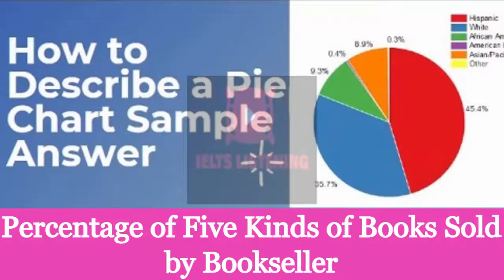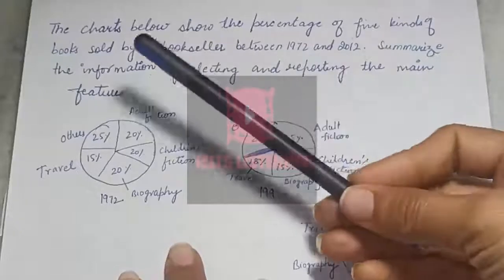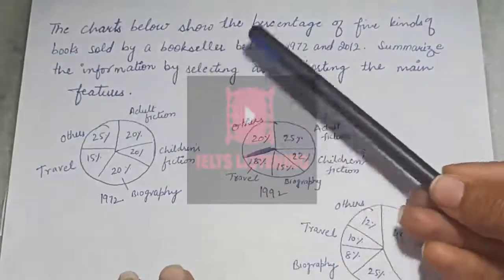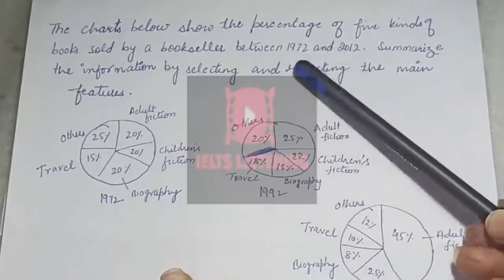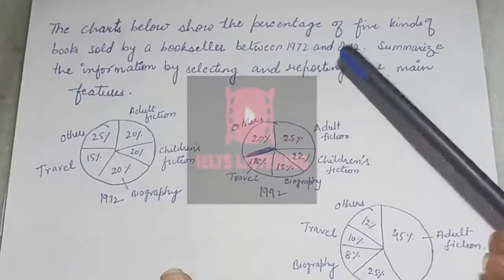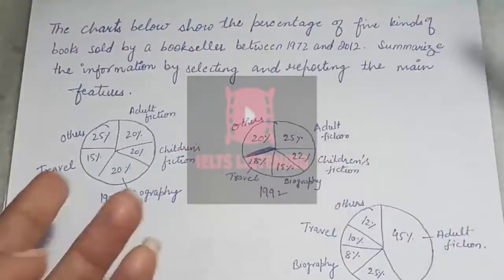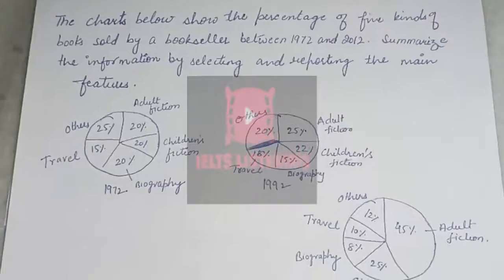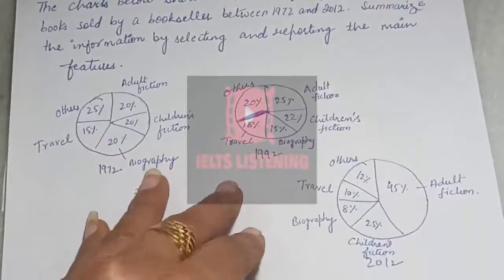In this video I'll discuss writing task one. You can see it's a pie chart with three pie charts. The question says: the charts below show the percentage of five kinds of books sold by a bookseller between the years 1972 and 2012. Summarize the information by selecting and reporting the main features and make comparisons where relevant.